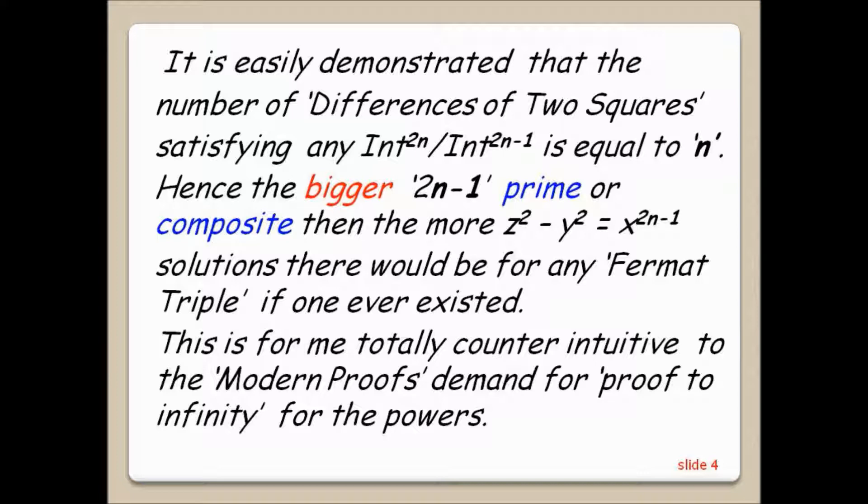Hence the bigger 2n minus 1 prime or composite then the more z squared minus y squared equals x to the 2n minus 1 solutions there would be for any Fermat triple if one ever existed. This is for me totally counter-intuitive to the modern proofs demand for proof to infinity for the powers.